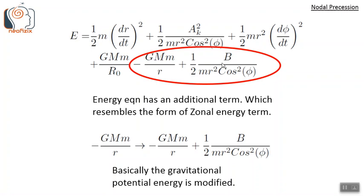This new term ½b/(mr² cos²φ) basically comes from the gravitational field. The gravitational potential is modified due to some reason — for example, presence of a third mass, or asymmetries in the mass distribution of the massive object. So the gravitational potential is no longer simply −GMm/r, but is modified by this inverse-square term. The new gravitational potential energy term is −GMm/r + ½b/(mr² cos²φ).